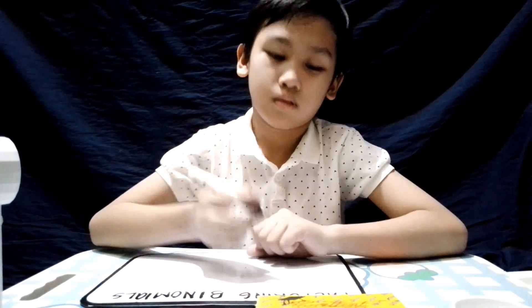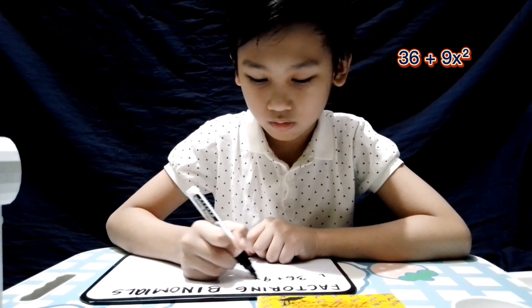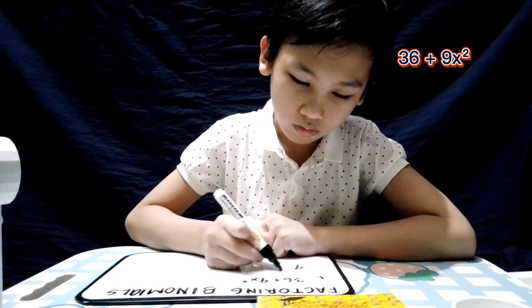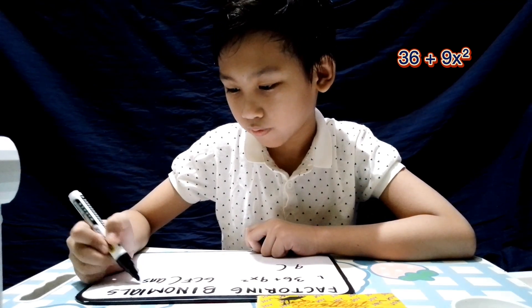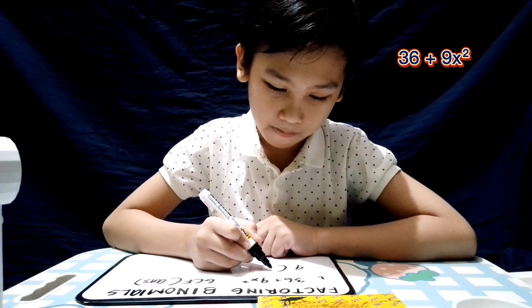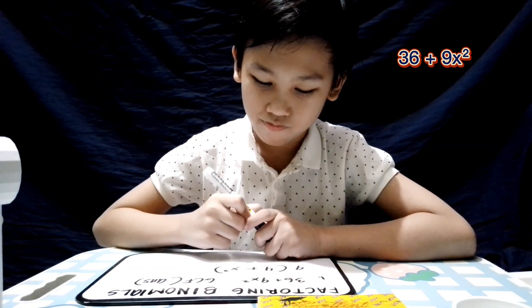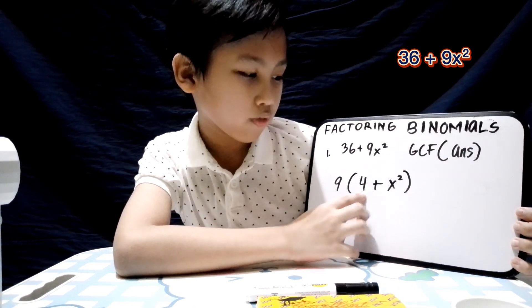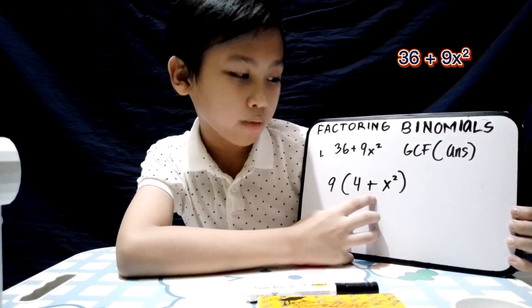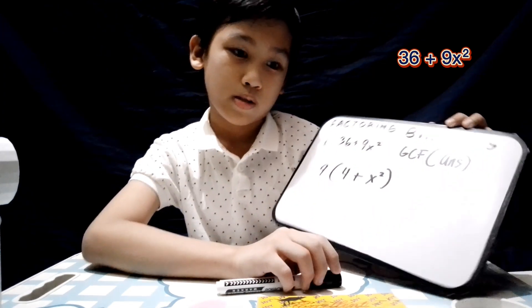Let's have an example for number 1: 36 plus 9x squared. Finding the GCF. The GCF is 9. The answer is 9 times open parenthesis 4 plus x squared, close parenthesis. You can read that as 9 times (4 plus x squared). Our GCF is 9.